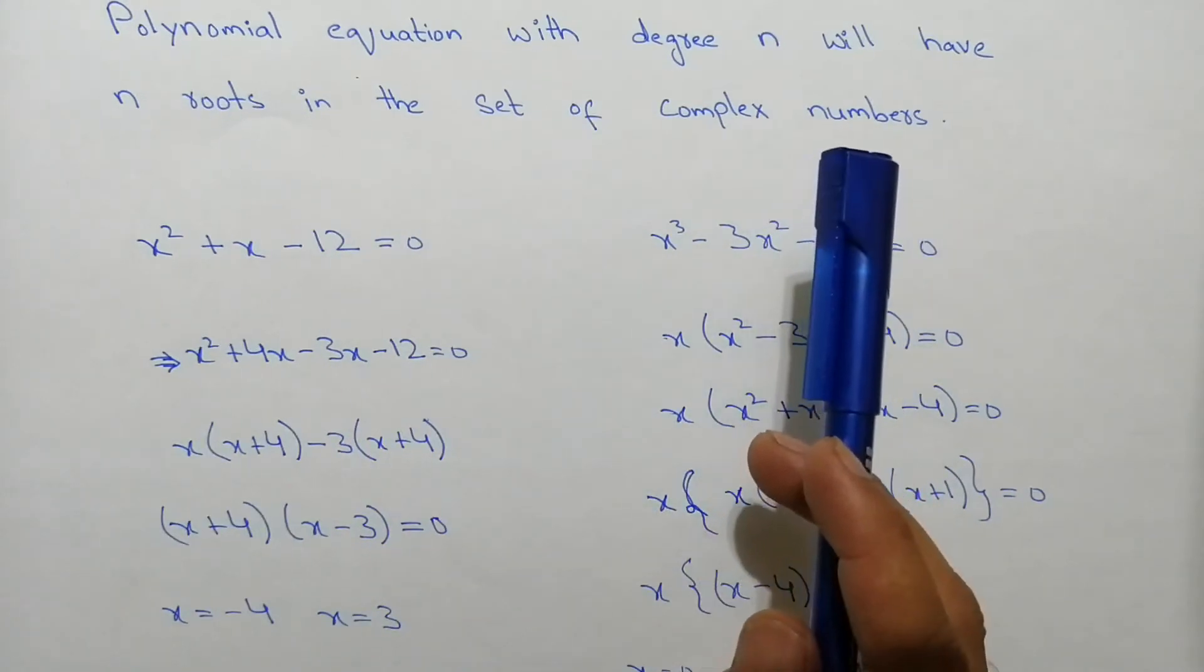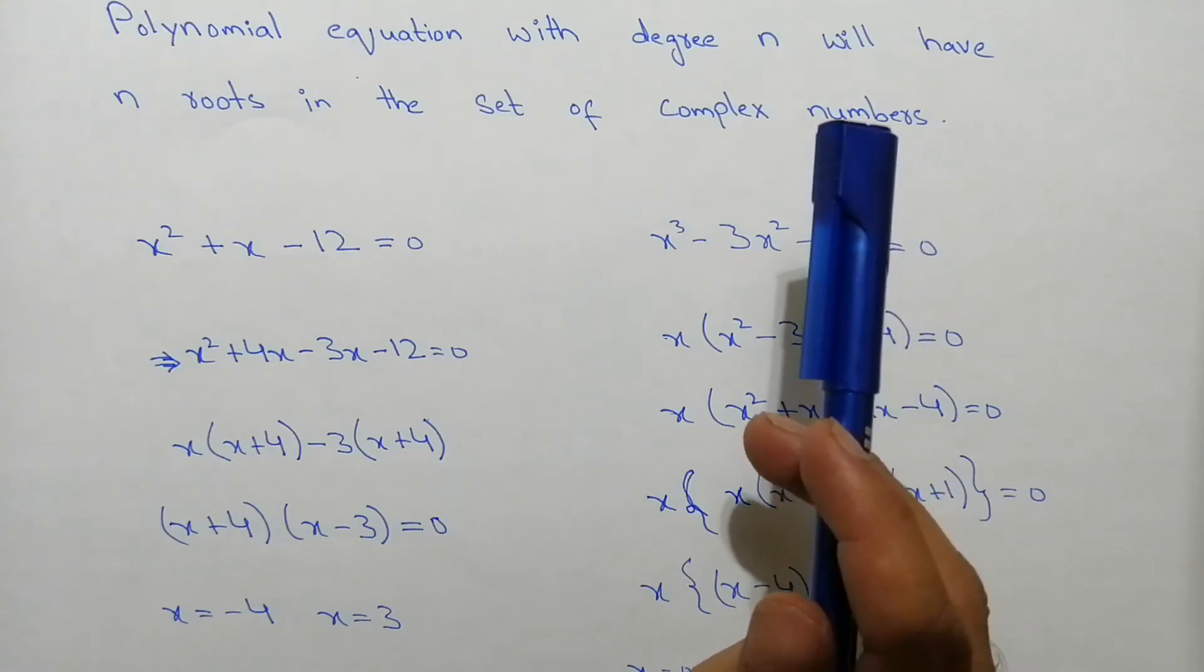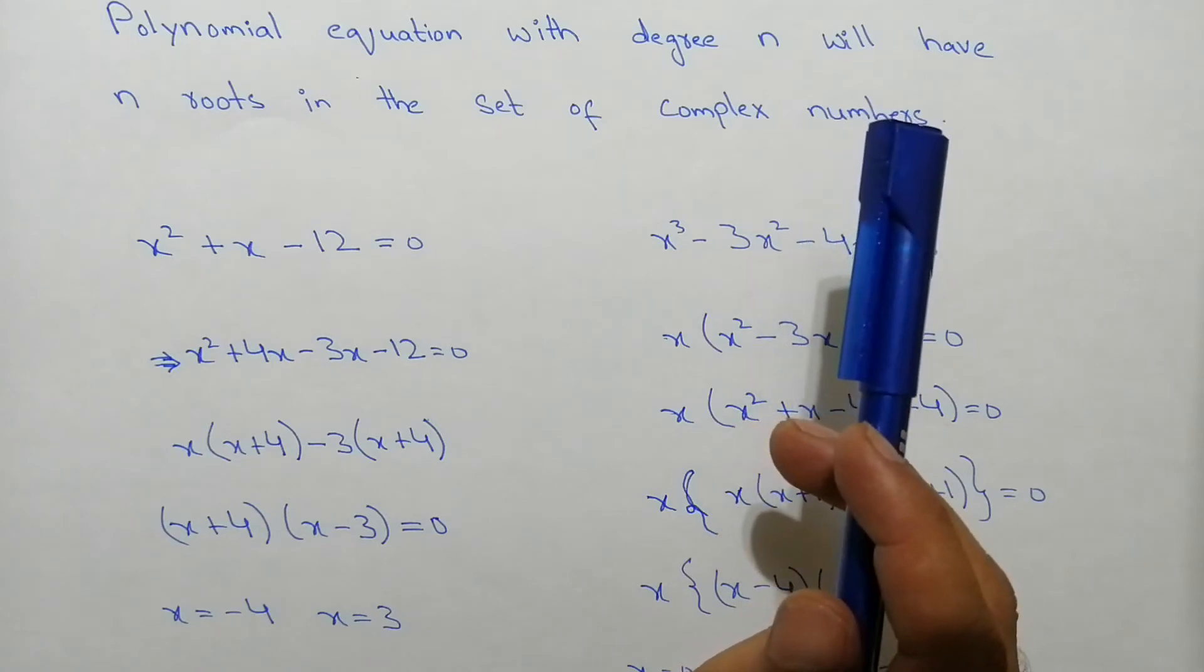Now what are the complex numbers? The complex numbers are those numbers that can be written in the form a plus bi. So these kinds of numbers are called the complex numbers.